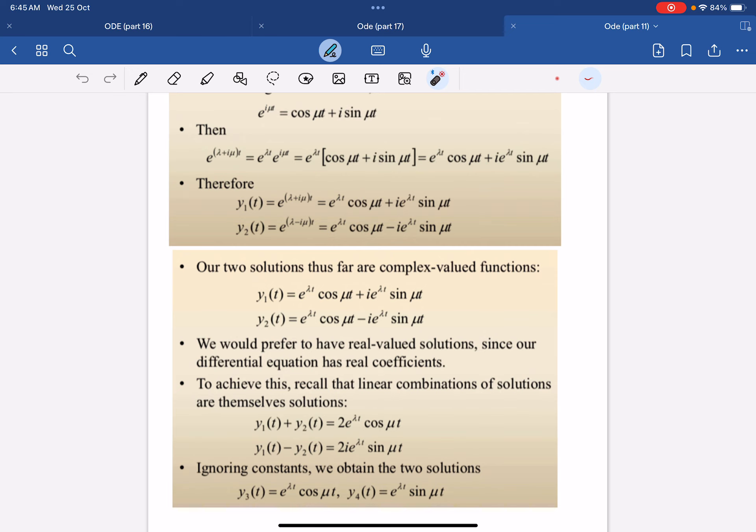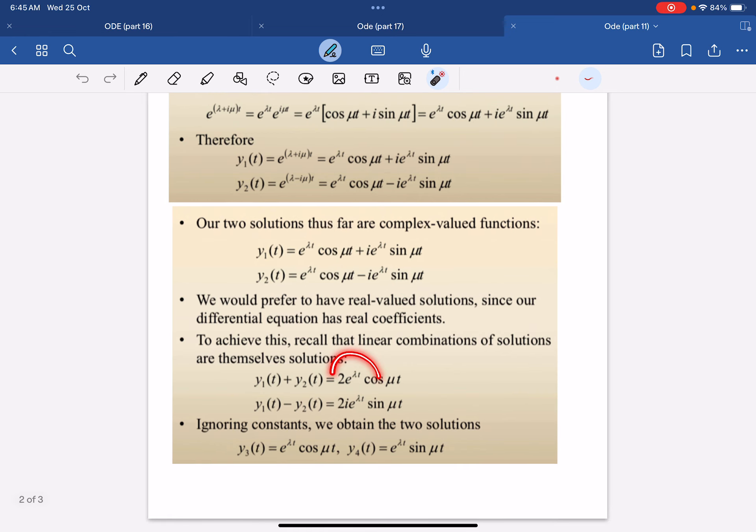So we want the real valued version. So what we do is we just take one plus the other and one minus the other. This will lead us to this and this. And if we ignore the constants, i is just also a constant. So this is a constant, so we cancel out. We arrive to this expression and this expression only.